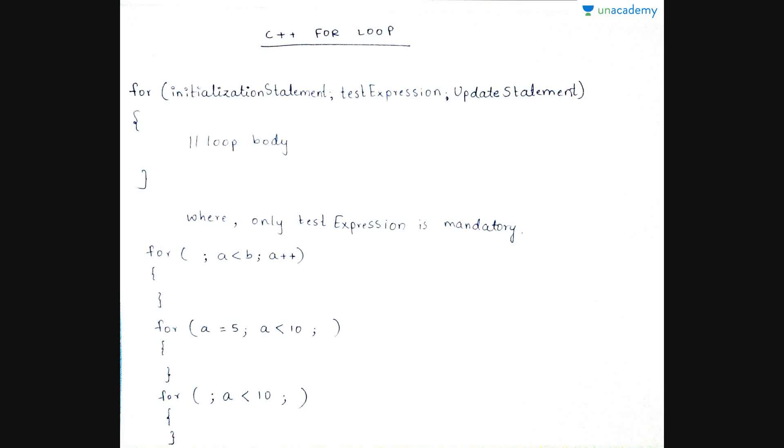Mainly there are three kinds of loops: for loop, while loop, and do-while loop. Let us first study what is for loop in C++.